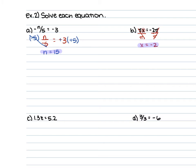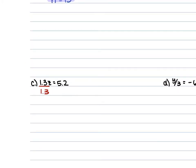For C, we have 1.3z is equal to 5.2. We divide each side by 1.3, which cancels out leaving z. When I have a fraction with decimals, I rewrite it without decimals first. I look at the largest decimal place — here it's 1 — so I move the decimal point one place to the right for both numbers. That makes 5.2 become 52 and 1.3 become 13. So that's 52 over 13; since 13 times 4 is 52, z is equal to 4.